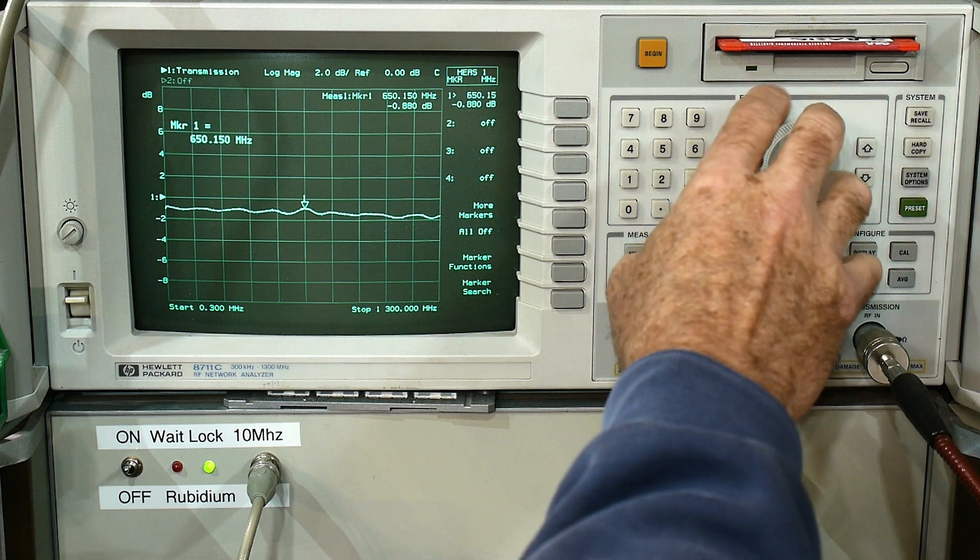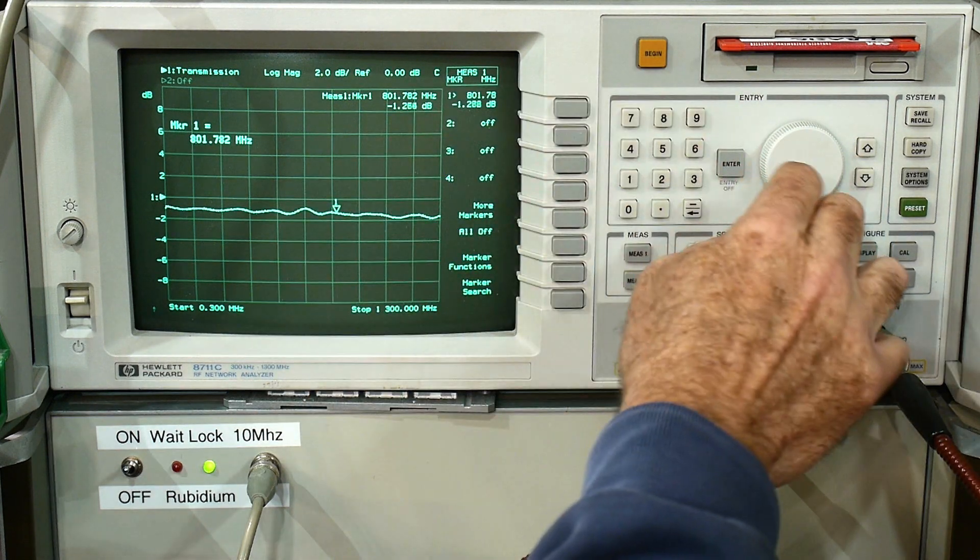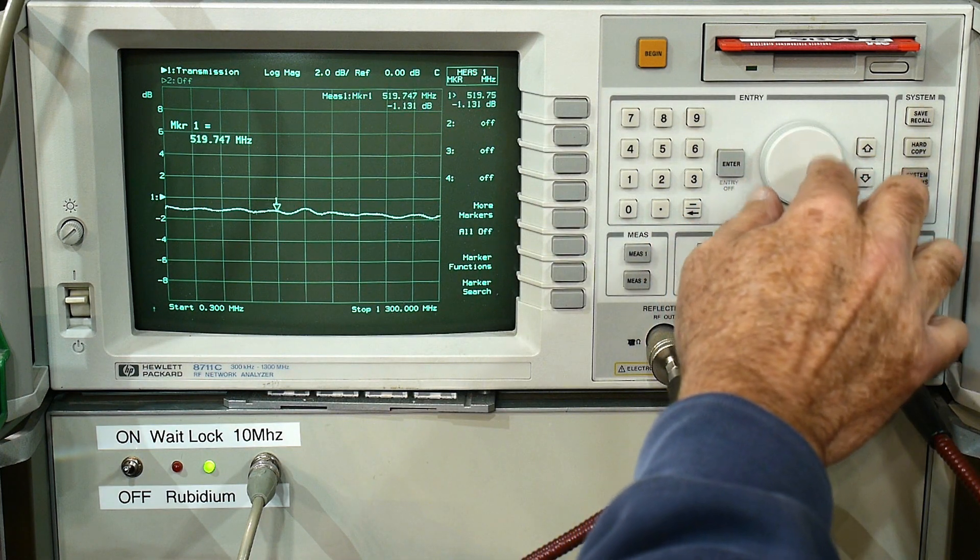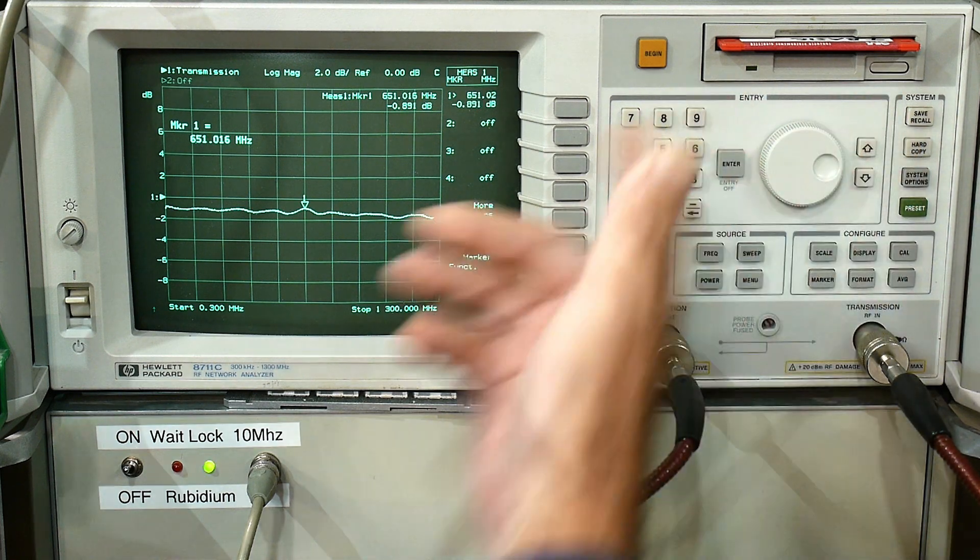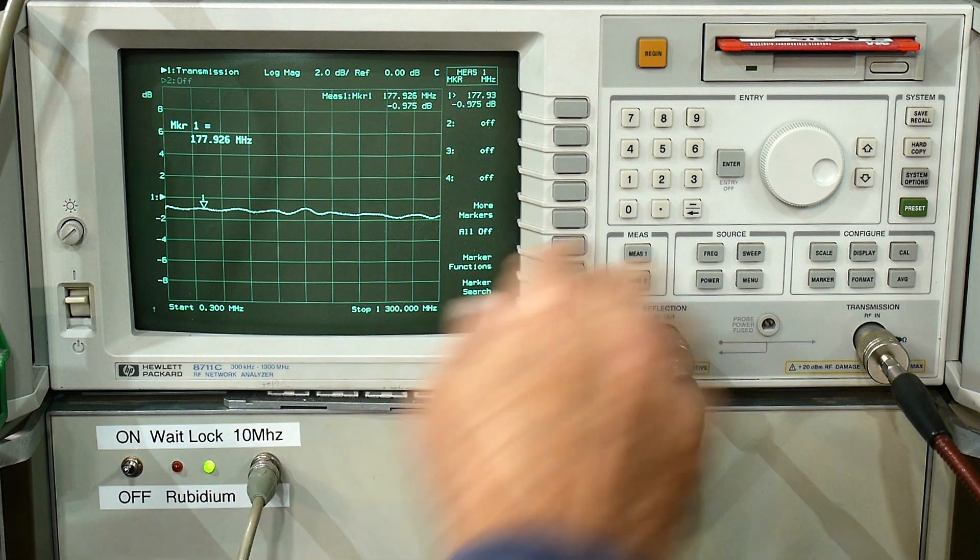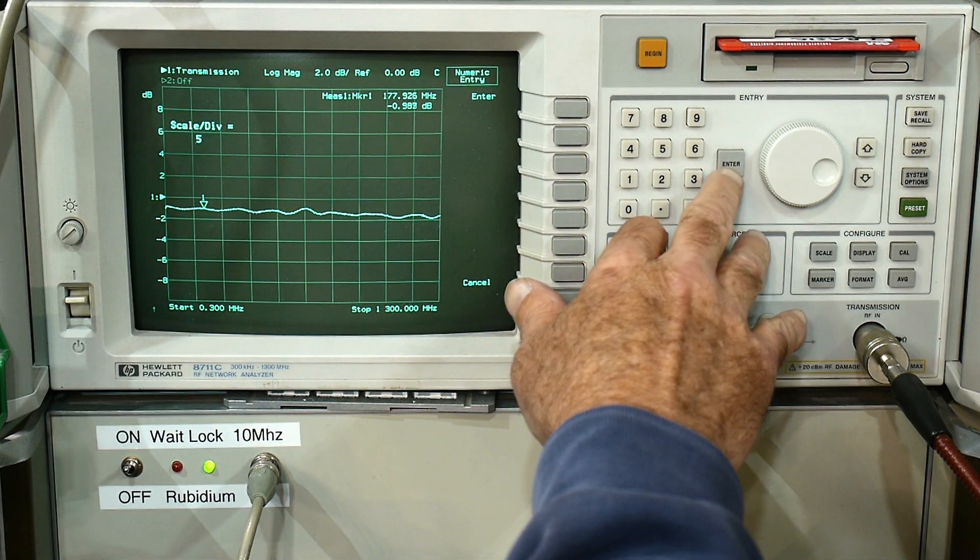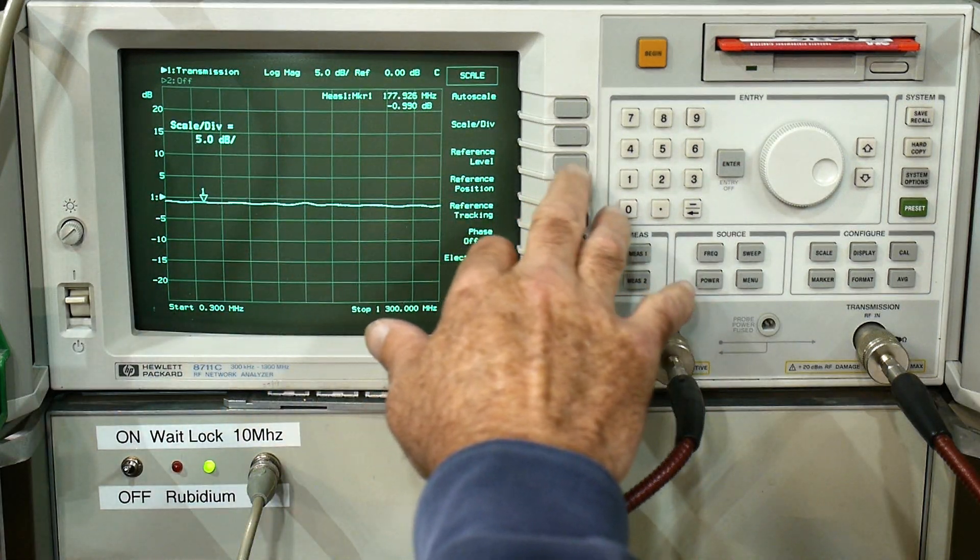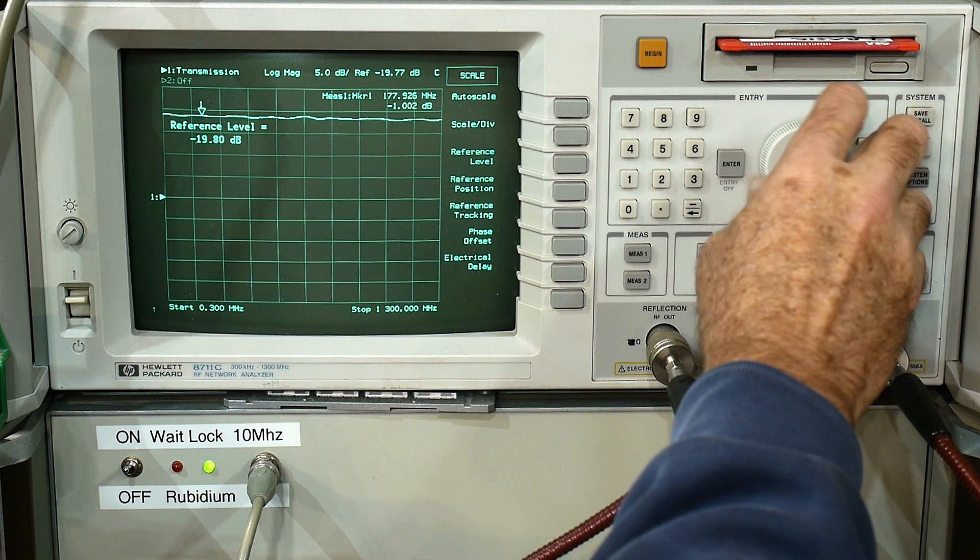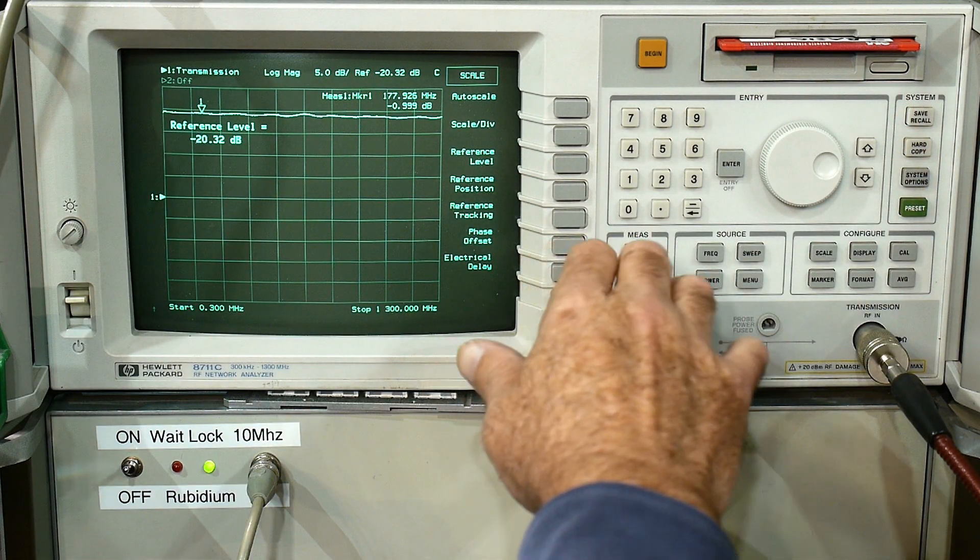We could put a marker in and we can read the marker here. So minus 1.2 at its worst here, it's minus 1.8. And at its best, it's minus 0.9. So that's the insertion loss for it. Let's change the scale back to 5 dB per division and move the reference level up near the top.